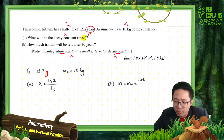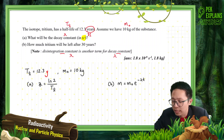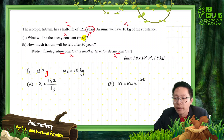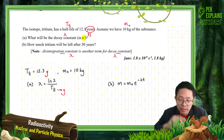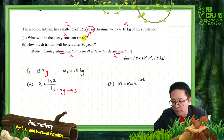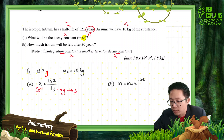The decay constant formula, given the half-life, is lambda = ln2 / half-life. Since we want lambda in per second, not per year, we must first convert the half-life from years into seconds.